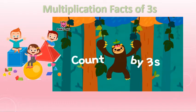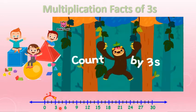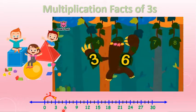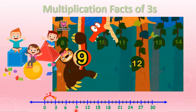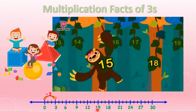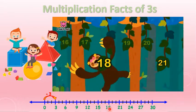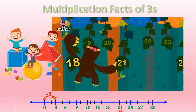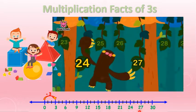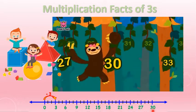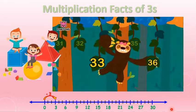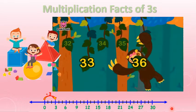Multiplication facts of 3 — we count by 3s: 3, 6, 9, 12, 15, 18, 21, 24, 27, 30, 33, 36.